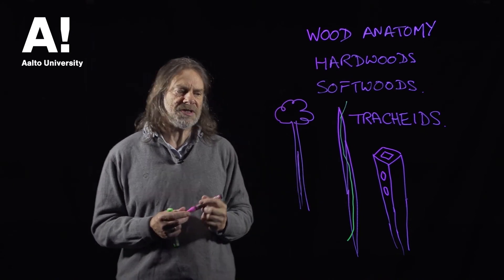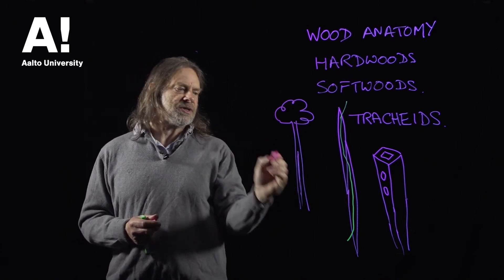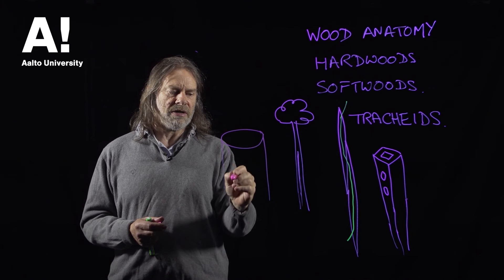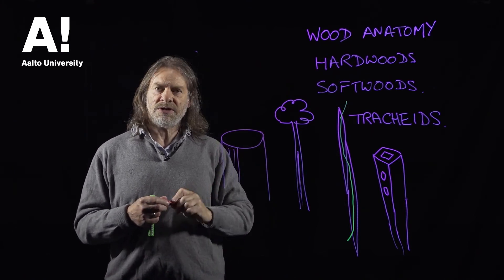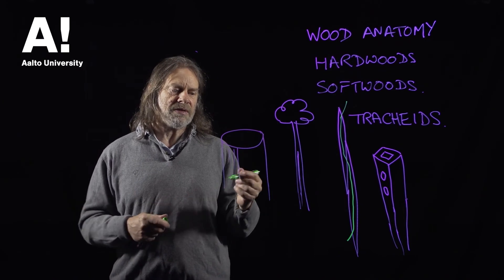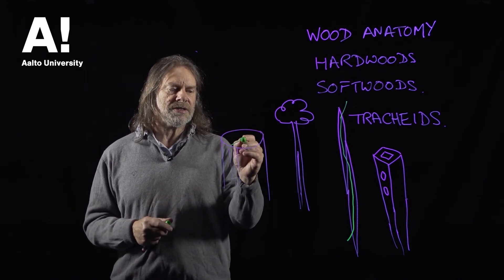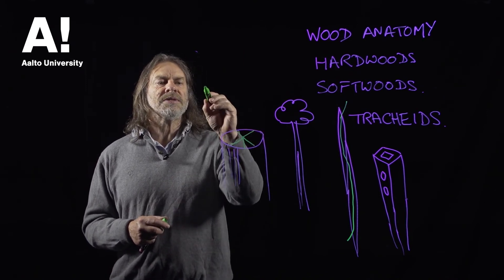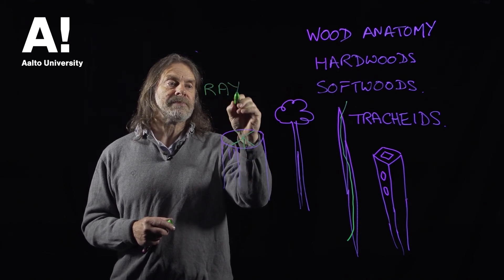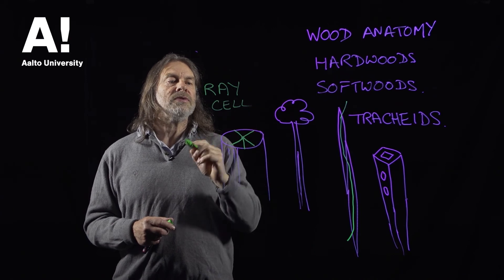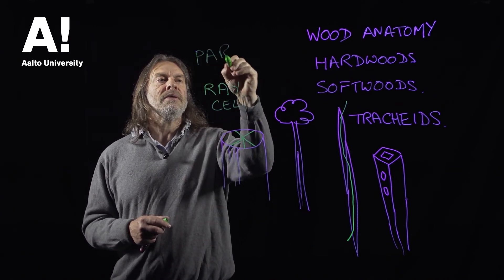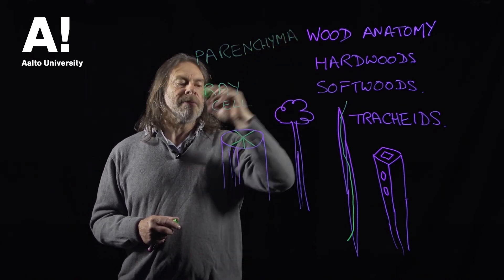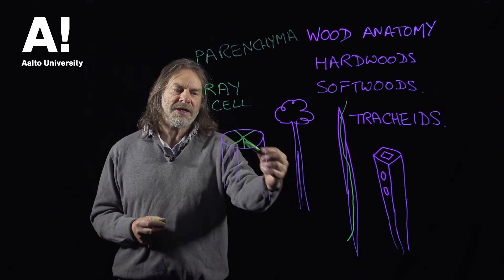We also have another type of cell, and that type of cell runs across. If we look at the trunk of a tree, we have the tracheids going up and down, but we also have another type of cell referred to as parenchyma cells, and they run out from the centre to the outside. If you look at them, they look a little bit like rays, so they're referred to as ray cells. You can have a conduction pathway in this direction as well.